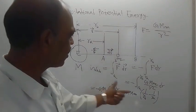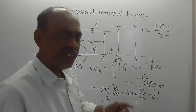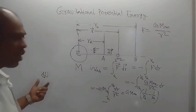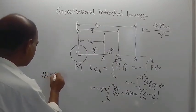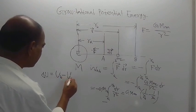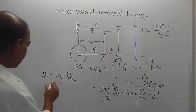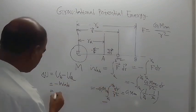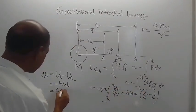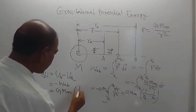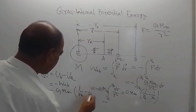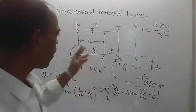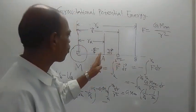Here work done is negative. We know that the change in potential energy, denoted by delta U, which equals UB minus UA, is equal to minus of W_AB. So, using this result, we can write: delta U equals G capital M small m into (1/Ra minus 1/Rb). This result is positive. So the change in potential energy is positive when the object is taken from point A to point B.